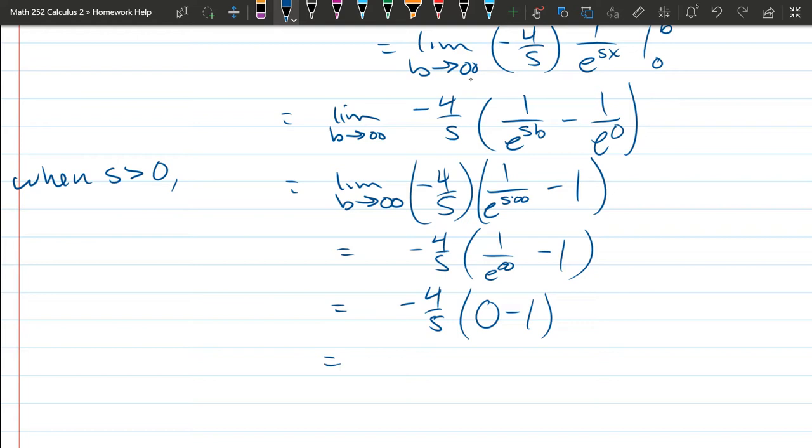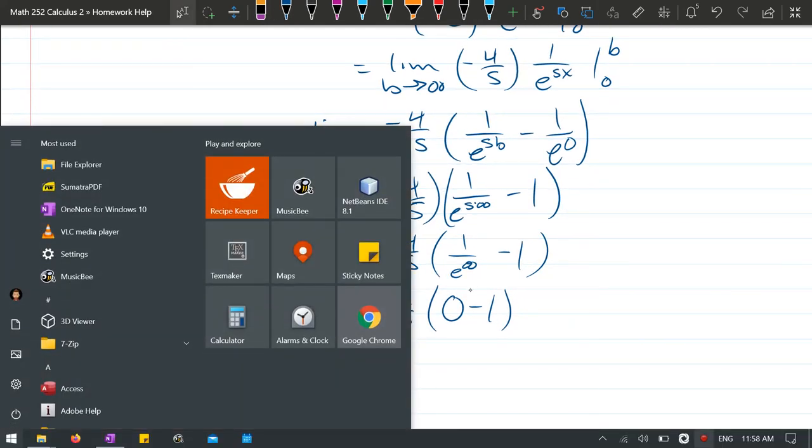And negative - now I have negative 1 times negative which is positive 4 over s, and that will be my L, my Laplace of 4 is 4 over s.